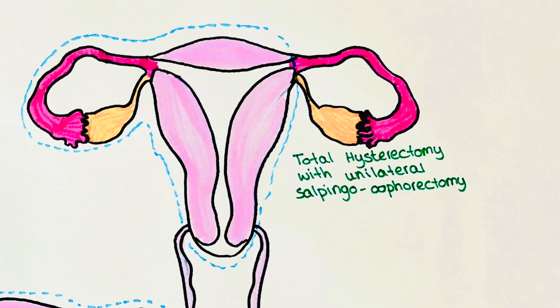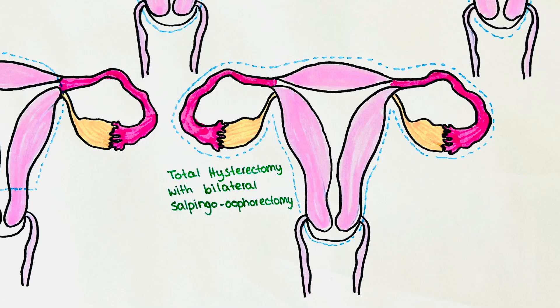Hysterectomy with unilateral salpingo-oophorectomy: in this type, the uterus, the cervix, and the fallopian tube and ovary on one side are removed. Hysterectomy with bilateral salpingo-oophorectomy: in this type, the uterus, the cervix, and the fallopian tubes and ovaries on both sides are removed.